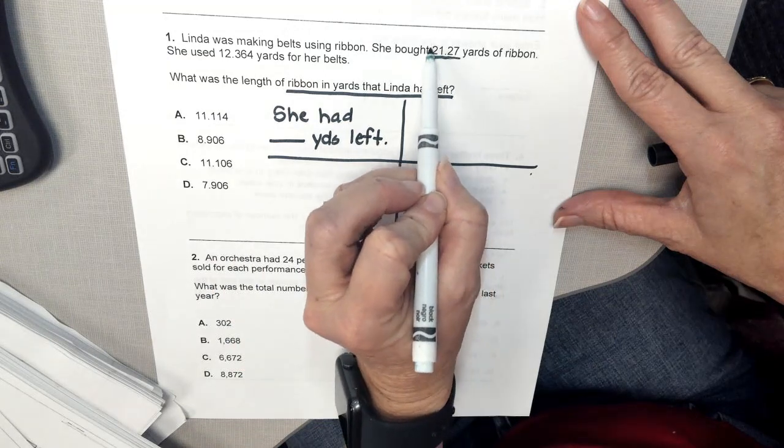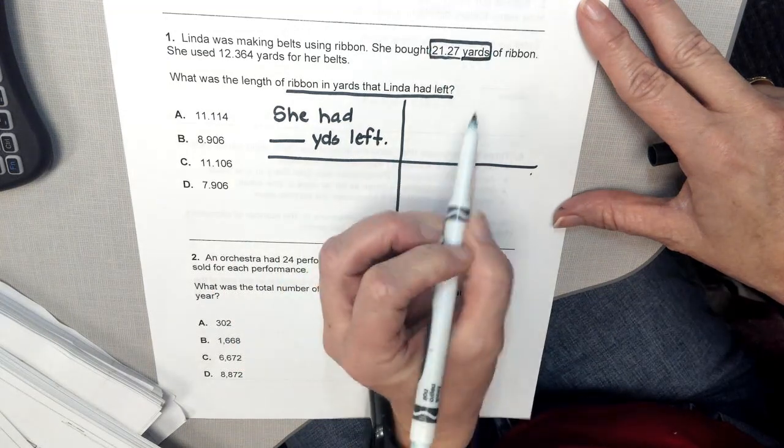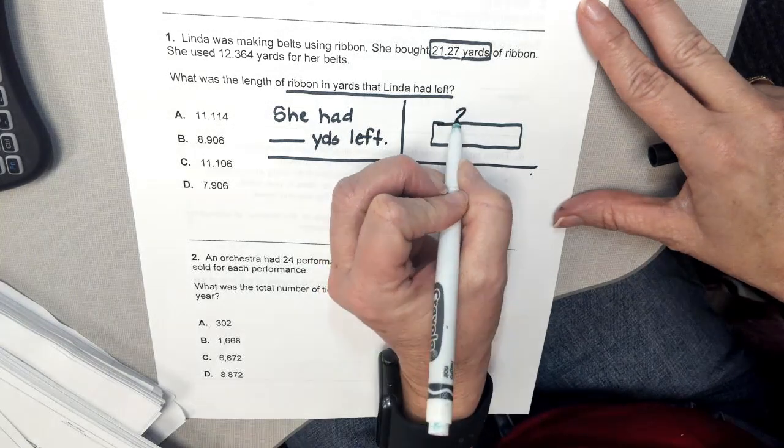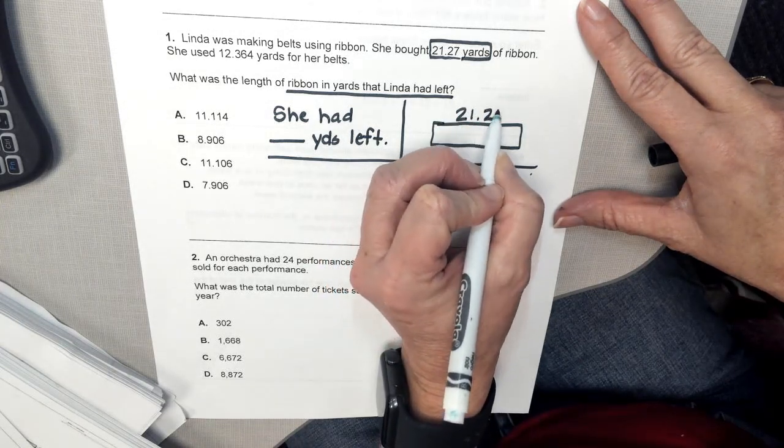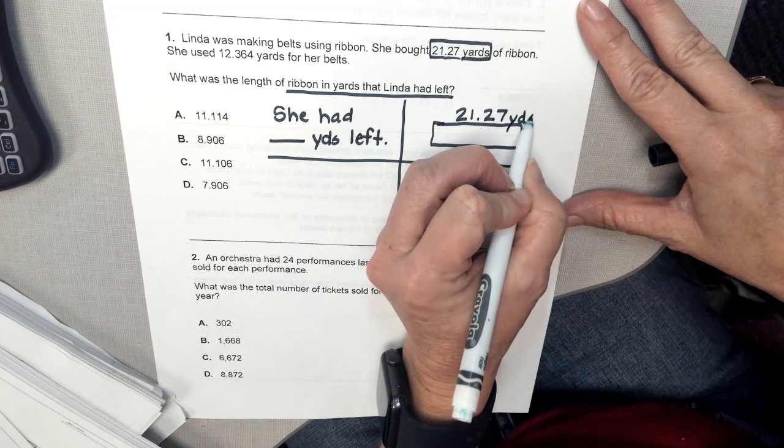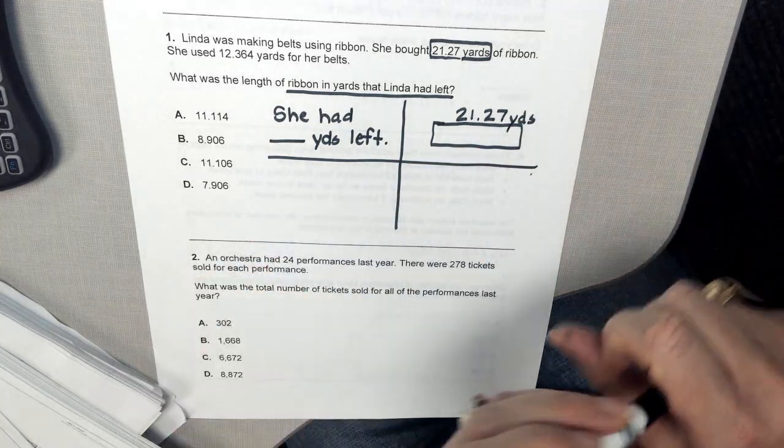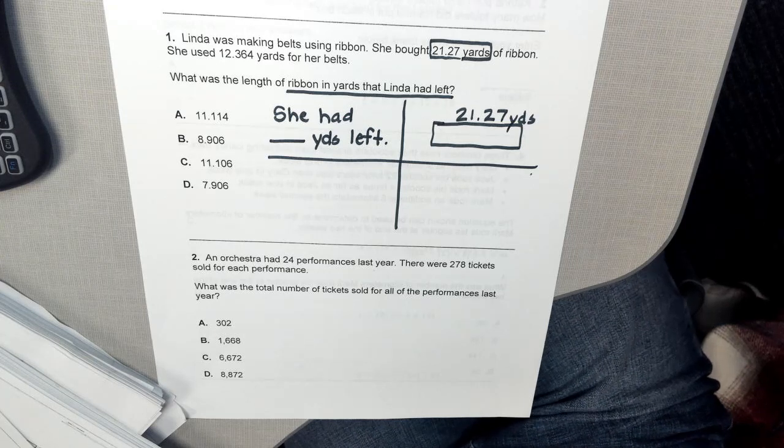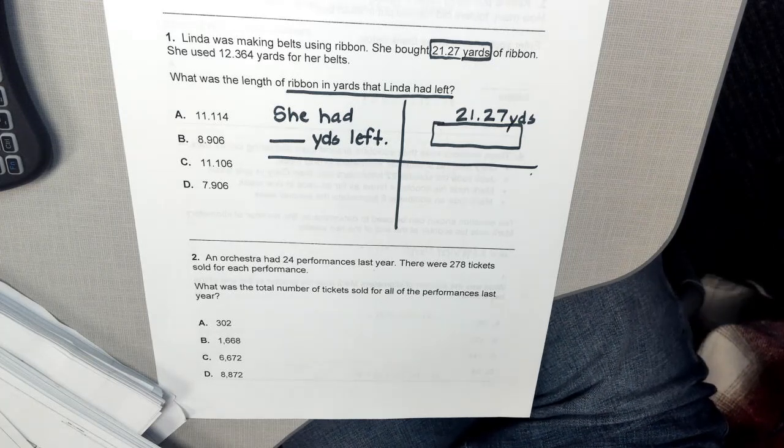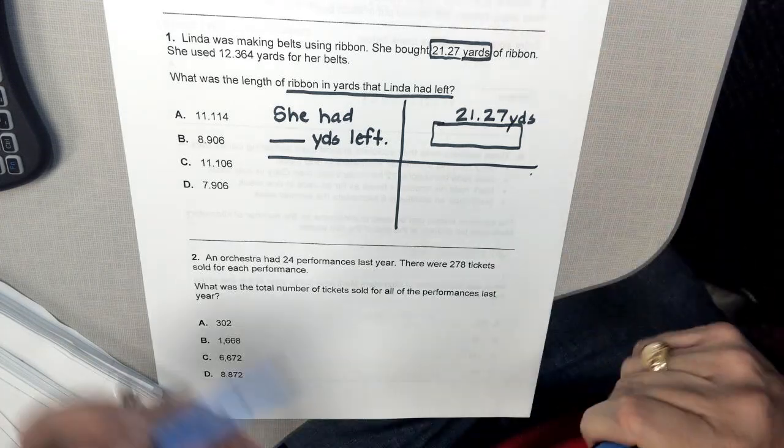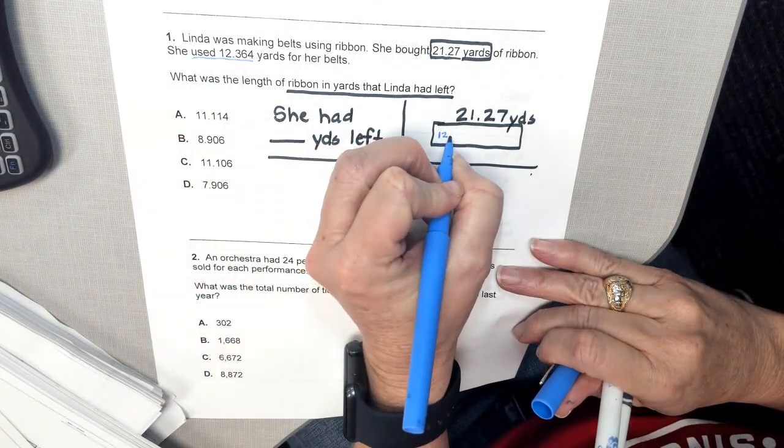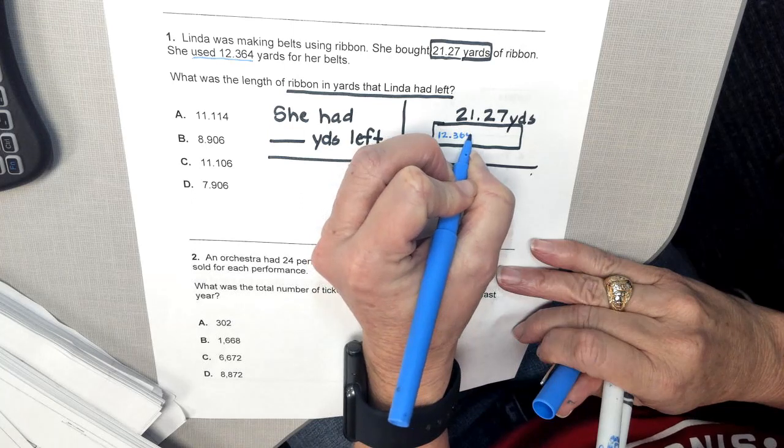We know that she bought 21 and 27 thousandths yards. So that's what she bought. And she used some to make a belt. So the amount that she used is 12 and 364 thousandths.